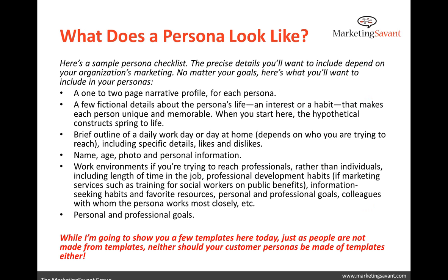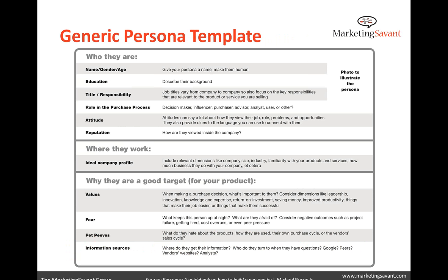Getting more specific on personas: in a social media case, we might just create a simple paragraph narrative with a photo — very simple, but it helps us write for this individual. There's also a template from Michael Gasp's book Personas: A Guidebook on How to Build a Persona. His generic template includes name, education, title, and attitude. Attitude is something you don't see in every persona, but it helps us understand their core mindset and what language actually appeals to them. In the B2B context, we might also want to understand their reputation in the industry or company, and their specific role in the decision process.